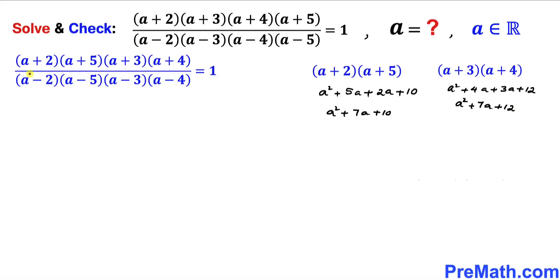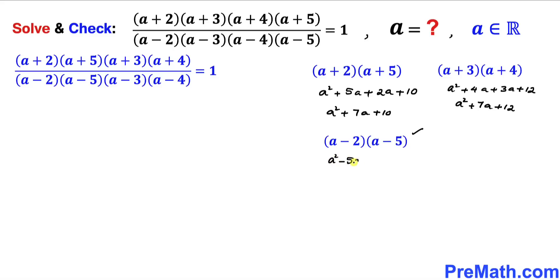Now let's focus on the denominator: (a-2) times (a-5). Multiplying out using double distribution gives us a² - 5a - 2a + 10. Combining like terms, we get a² - 7a + 10.